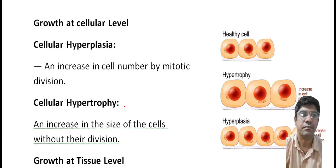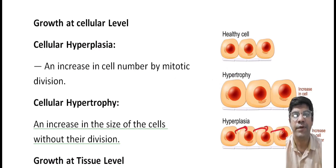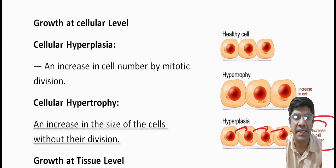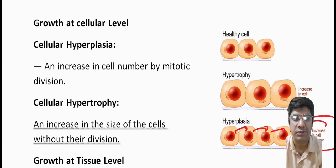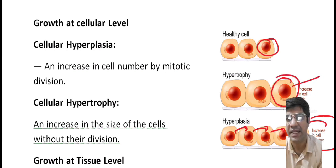Growth can occur at the cellular level. The first type is cellular hyperplasia — hyperplasia means increase in cell number. This type of growth involves increase in the number of cells through mitotic division, resulting in proliferation of cells leading to enlargement of the tissue or organ. Cellular hyperplasia is generally seen in response to increased demand, such as during tissue repair or in response to hormonal changes.